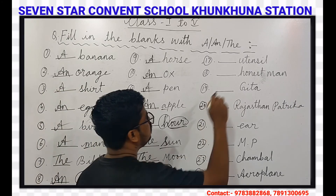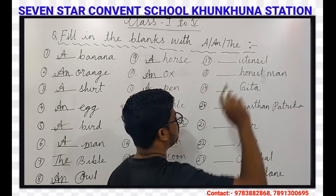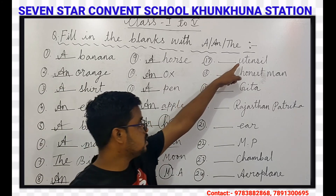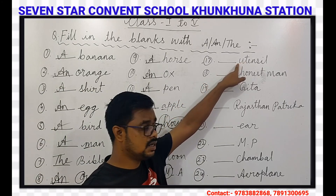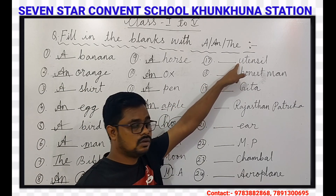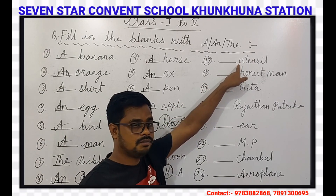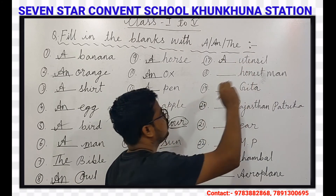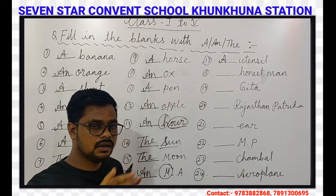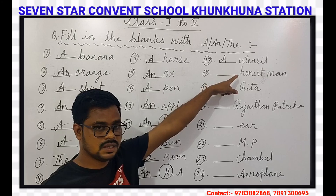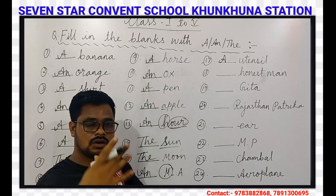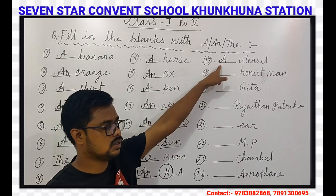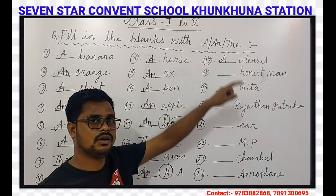Our next question is Utensils. The first letter is U, and U is a vowel, but A will come here. Because when we pronounce Utensils, a consonant sound is coming. So we use A.